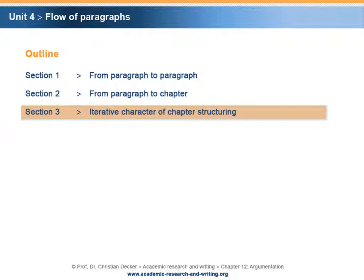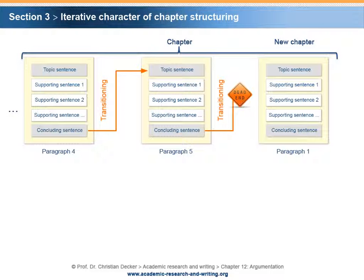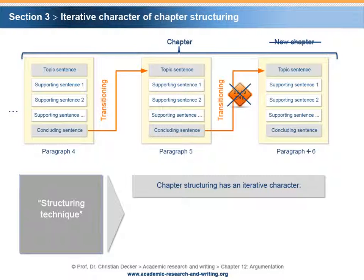Section 3 – Iterative character of chapter structuring. Writing a research paper is an ongoing process. As you dive deeper into the research question to be addressed, new ideas and insights to the topic will develop. An adjustment of the previously drafted outline might be necessary. For example, you might come to the conclusion that there is no need for a previously planned chapter. Moreover, you might realize that a chapter belongs to another chapter already under construction. Here, it becomes necessary to merge two chapters as illustrated. While the rules of structuring technique have to be applied, it still may be necessary to adjust the details of an outline. Therefore, chapter structuring has an iterative character.